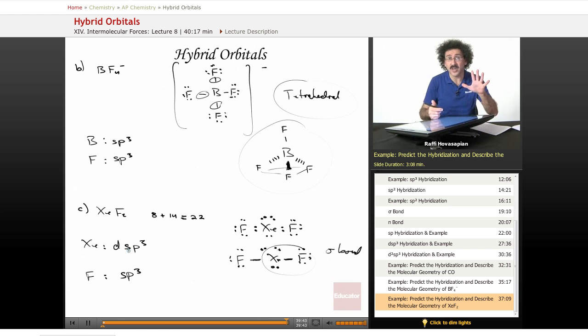If you have five objects, it's DSP3. And if you have six objects, it's D2 SP3.